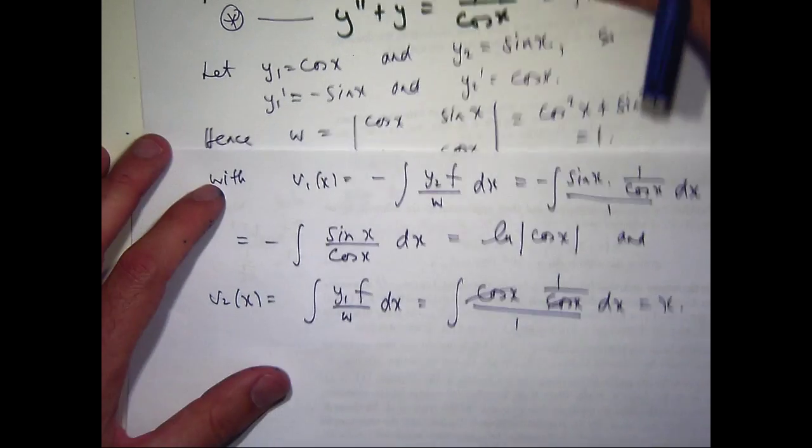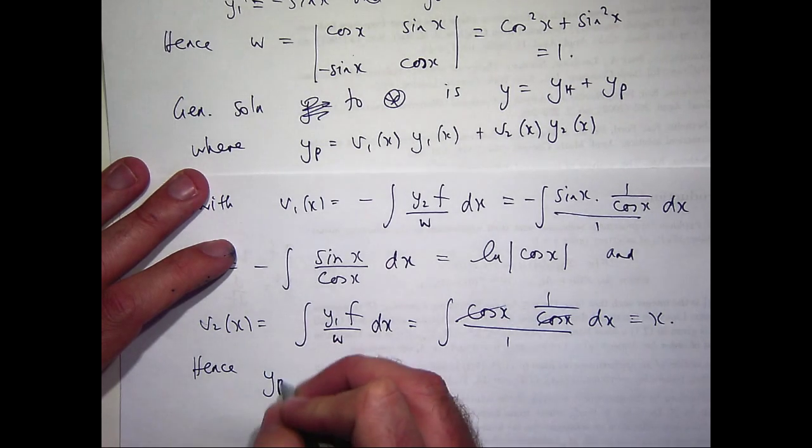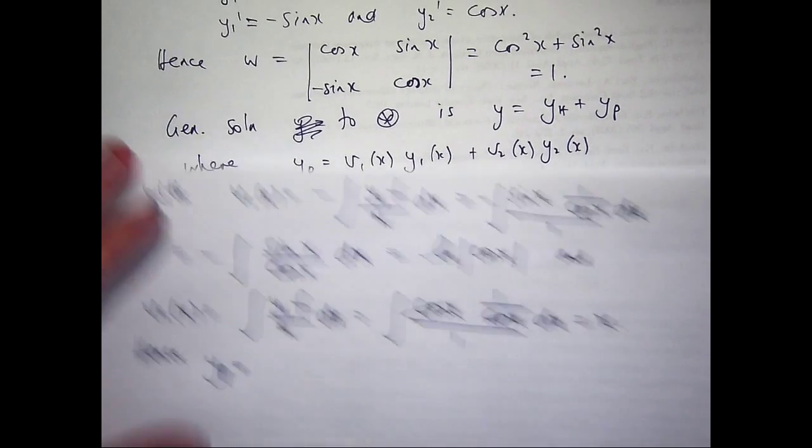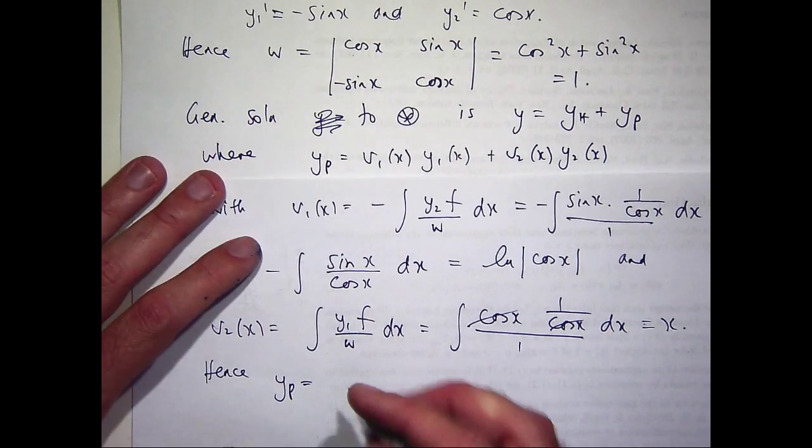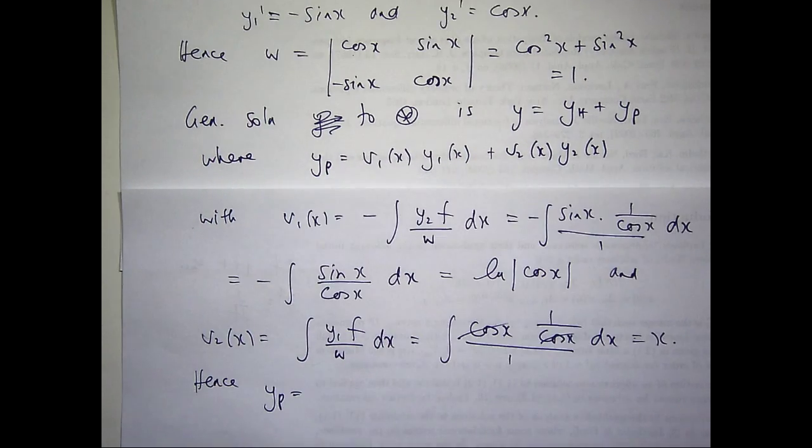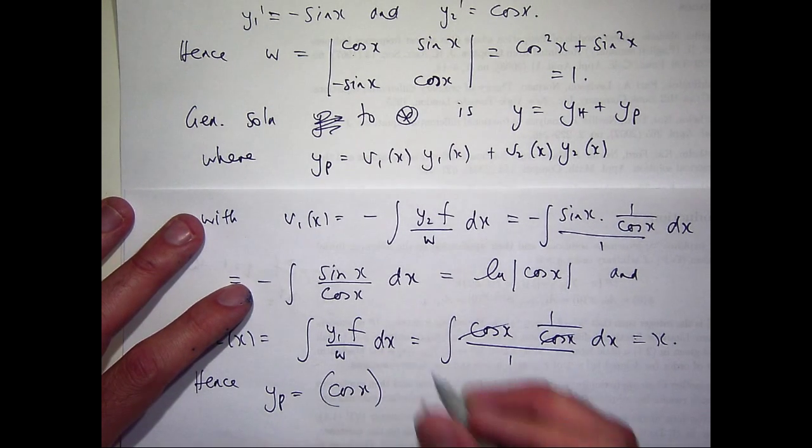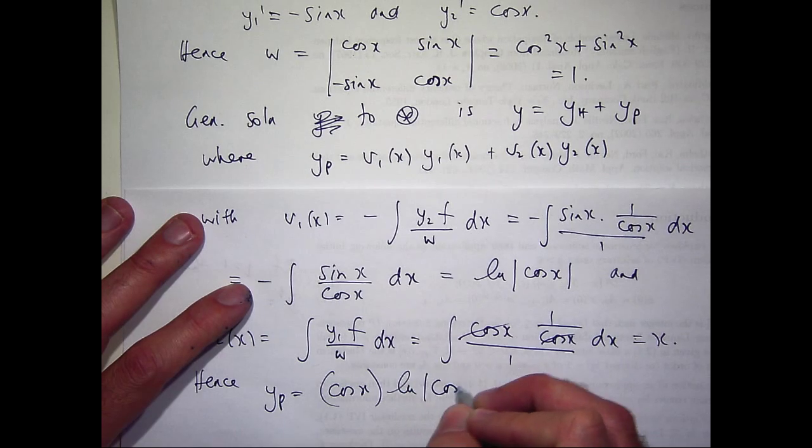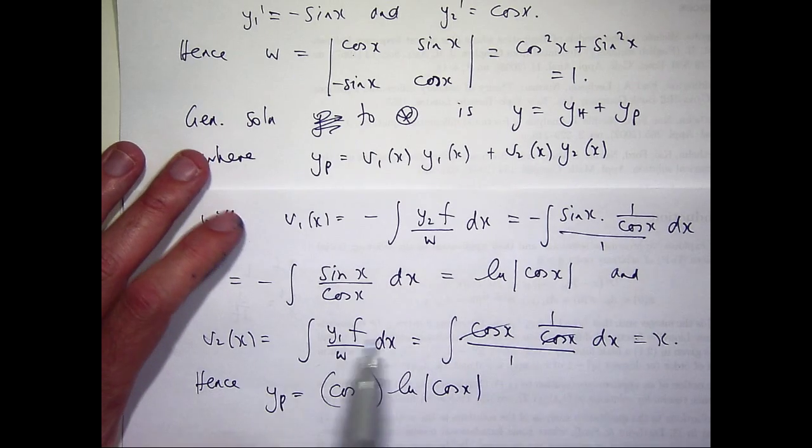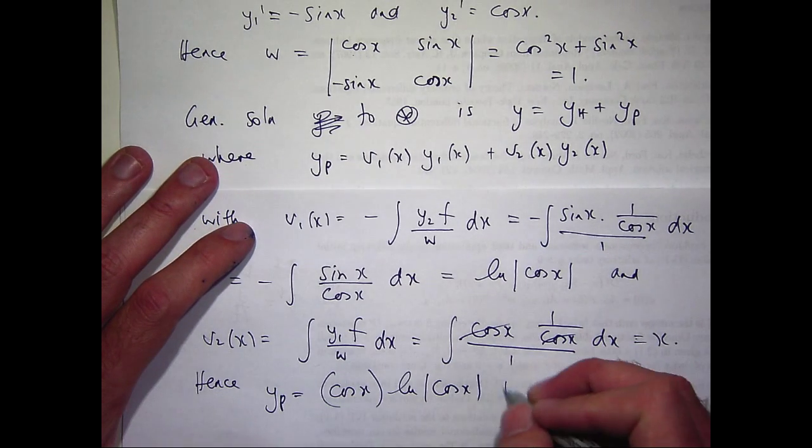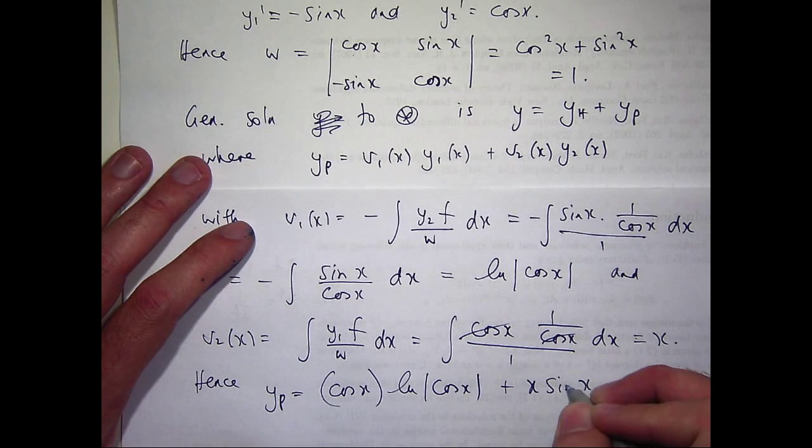So what's my y sub p going to be? It's v1 times y1. So v1 is this, so multiply that by my y1, cosine x. So I'm going to get something like cosine x times log cosine x plus v2 y2. So v2 is down here, so that's just plus x sin x.